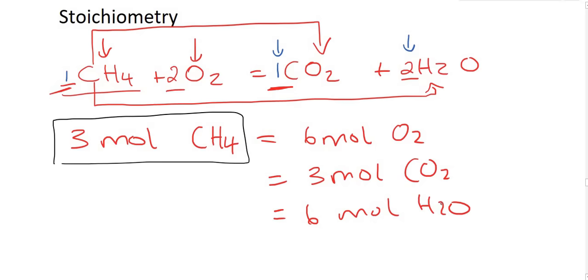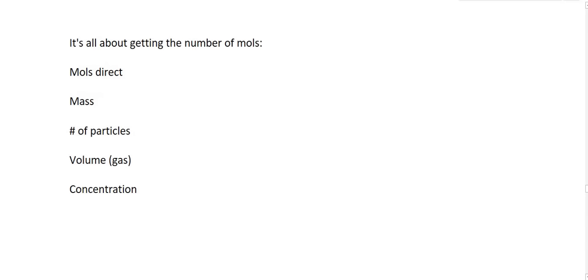Our goal is to always make sure that these equations are balanced first of all, and then to always use moles. You don't want to use mass or concentration — you want to use moles. That is the foundation of chemistry. It's all about getting the number of moles. There are five main ways they could give you information to find moles.